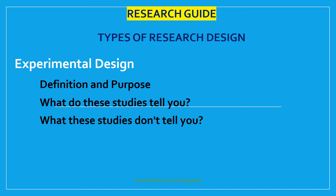What experimental design tells you: It allows the researcher to control the situation and answer the question 'what causes something to occur?' It permits the researcher to identify cause and effect relationships between variables and to distinguish placebo effects from treatment effects. Experimental research designs support the ability to limit alternative explanations and to infer direct causal relationships in the study. And the approach provides the highest level of evidence for single studies.